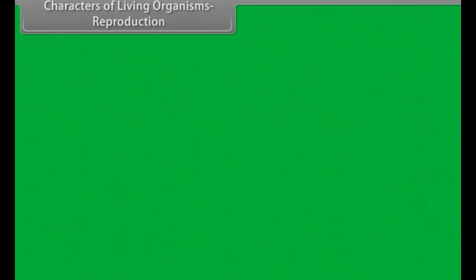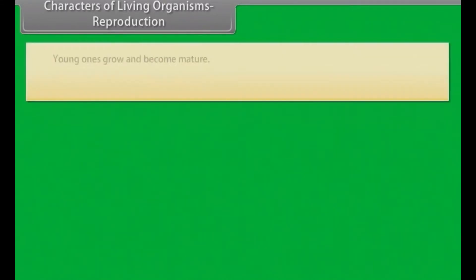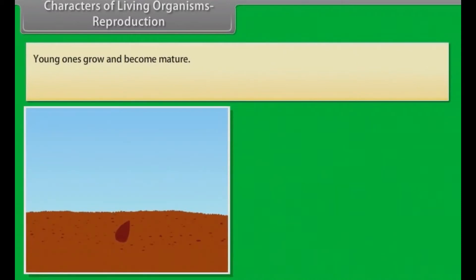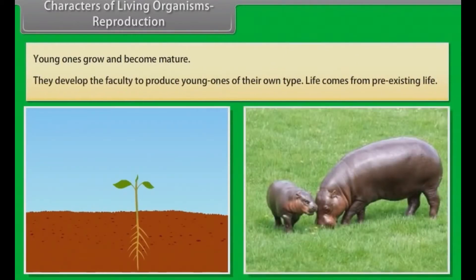Young ones grow and become mature, then develop the faculty to produce young ones of their own type. Life comes from pre-existing life.